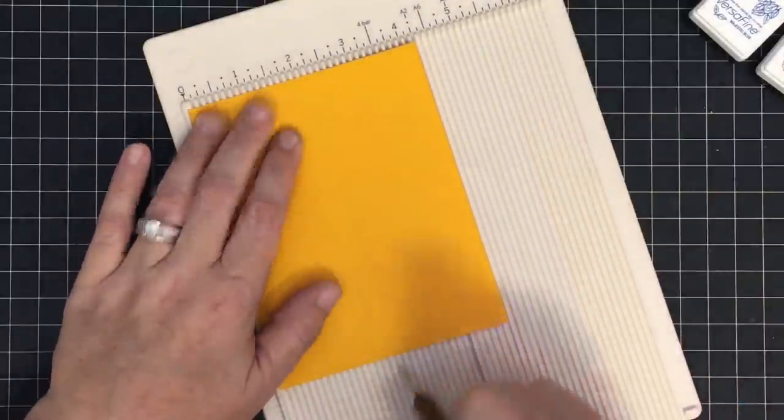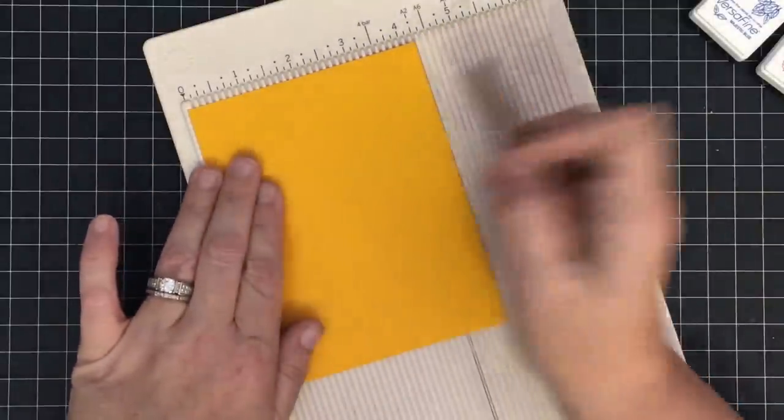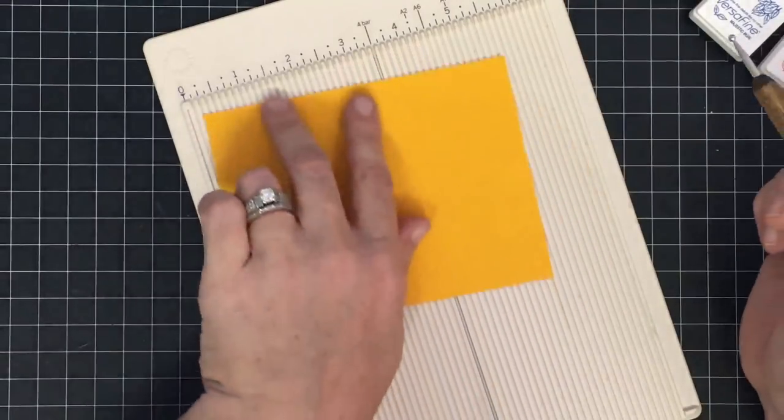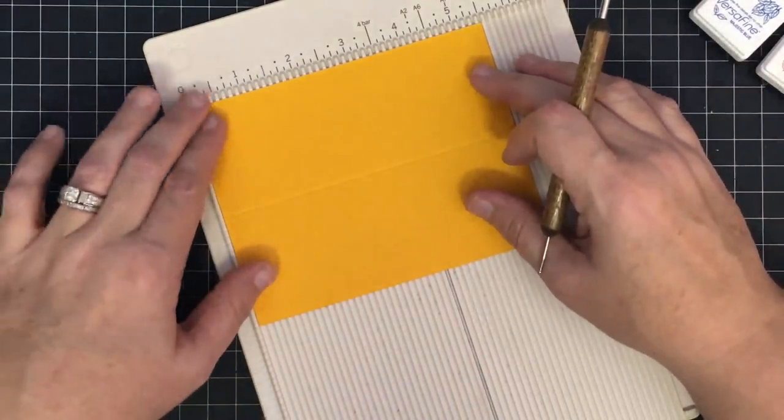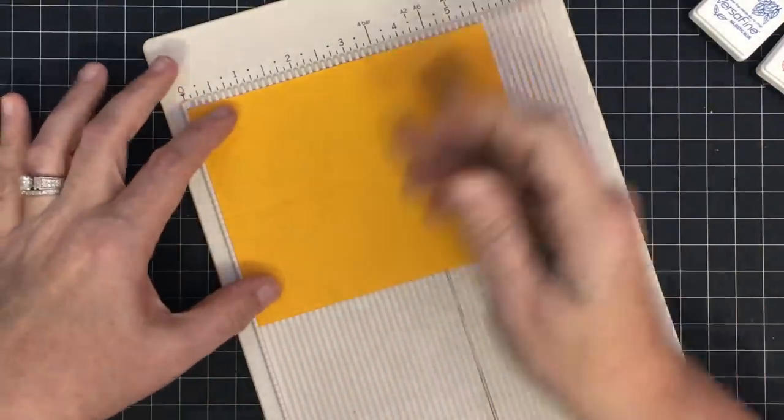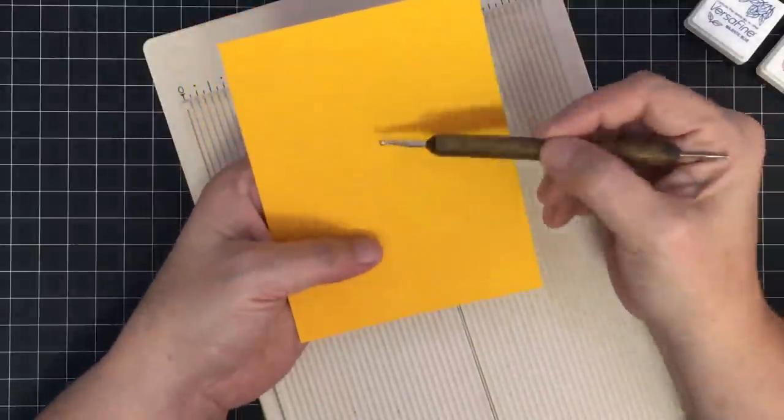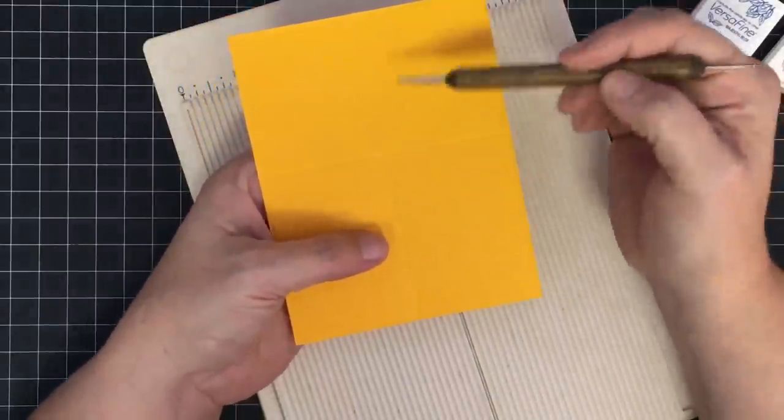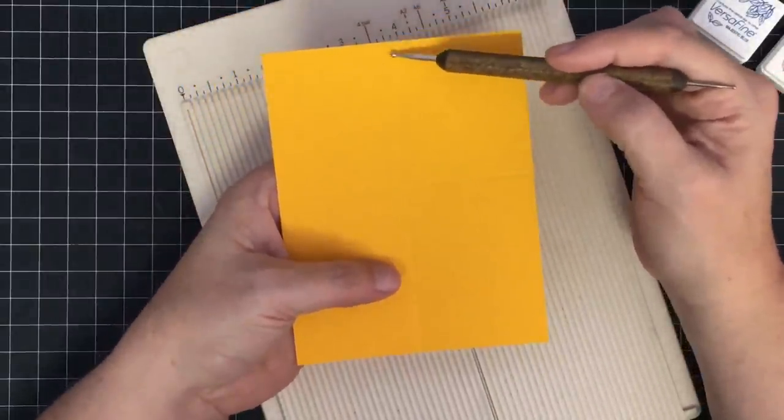I'm splitting the center of the card front. I'm going to turn this in my scoreboard and make one more score mark at two and one-half, so I'm not doing a center cross mark. I'm doing a little bit higher than center, so the top of my card will be here, the shorter section, and the longer section will be the bottom of my card.